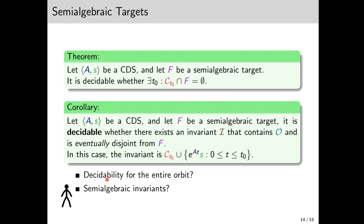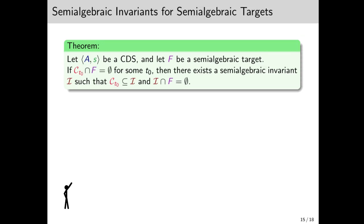First is whether we can obtain decidability of invariants for the entire orbit, not just eventually. Second, the fact that even for semi-algebraic targets, we still end up with CT0, which is not semi-algebraic. That's kind of unfair. We'll start with the latter. And we have good news on this front.